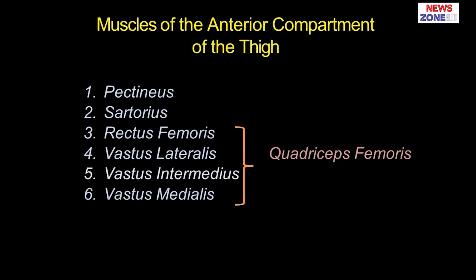Now let's see what are the muscles of the anterior compartment of the thigh. There are basically six muscles: pectineus, sartorius, then quadriceps femoris. The name quadriceps femoris is very important because quadriceps femoris basically has four muscles: rectus femoris, vastus lateralis, vastus intermedius, and vastus medialis.